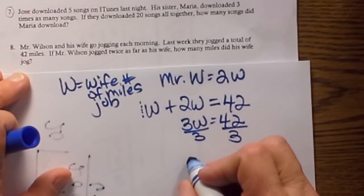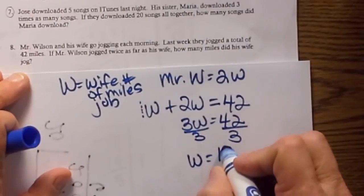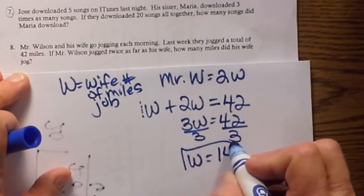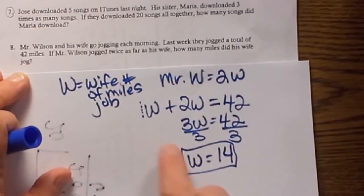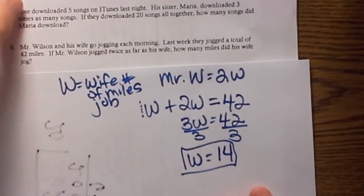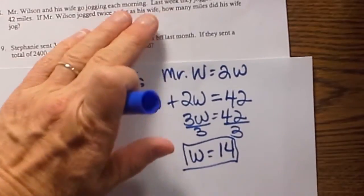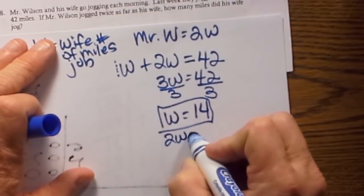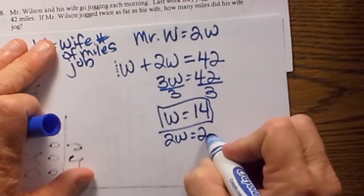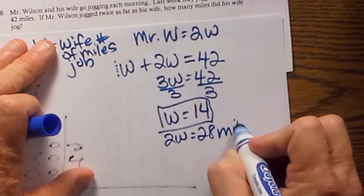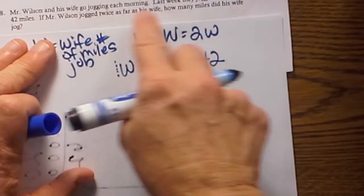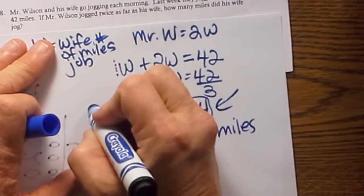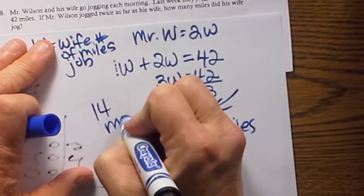So we get W is equal to 14. So that means the wife, because W stood for the wife's mileage, she jogged 14 miles. And let's see what the husband, not that that's the question, but if we were asked the question, he ran 2W or he ran 28 miles. Now the question, let's go back, says how far, how many miles did the wife jog? Well the answer is 14 miles.